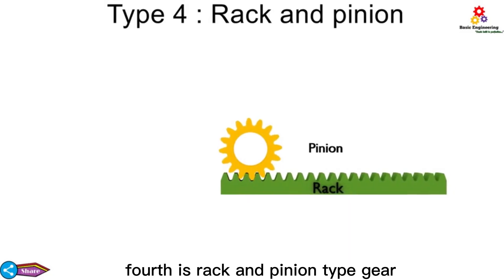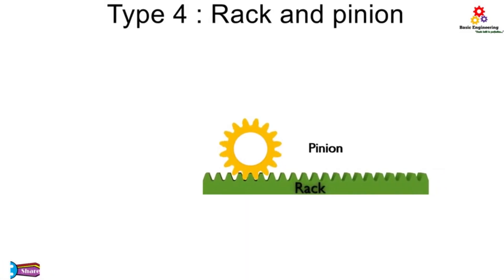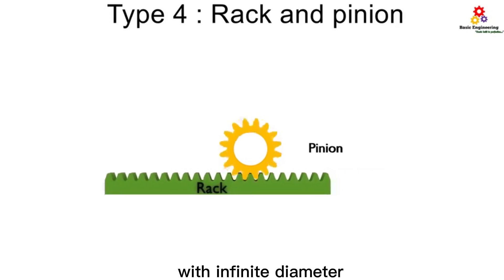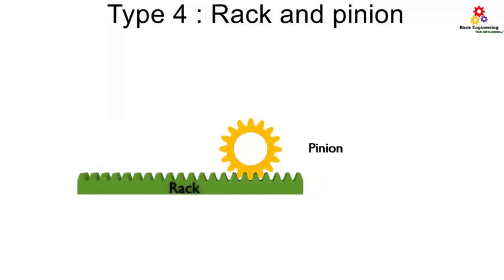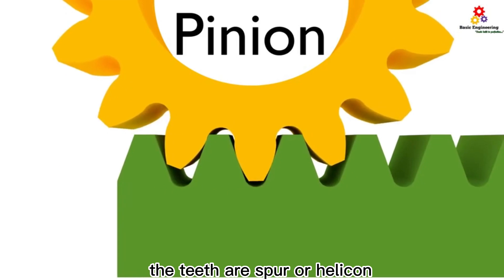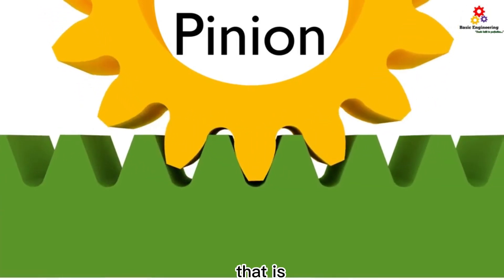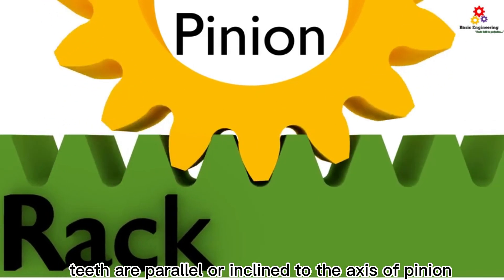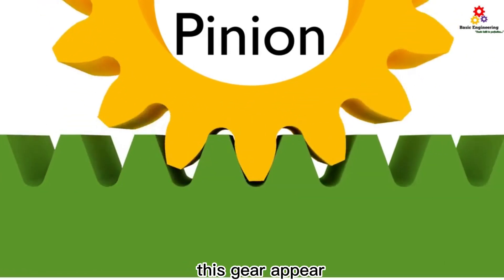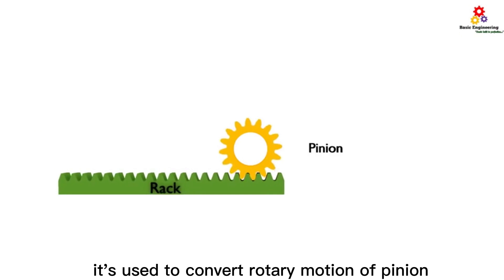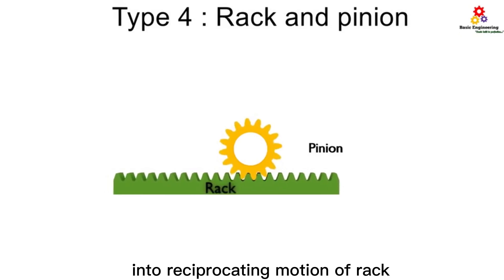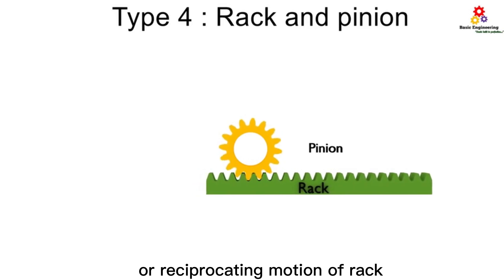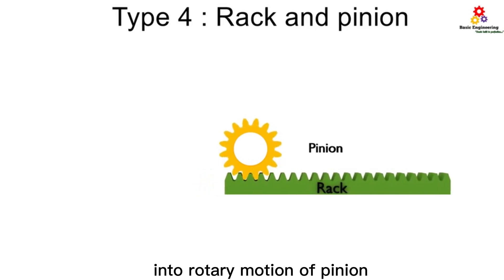Fourth is rack and pinion. Rack is a segment of gear with infinite diameter. The teeth are spur or helical — that is, the teeth are parallel or inclined to the axis of the pinion. This gear pair is used to convert rotary motion of the pinion into reciprocating motion of the rack, or reciprocating motion of the rack into rotary motion of the pinion.